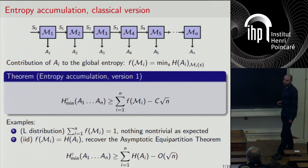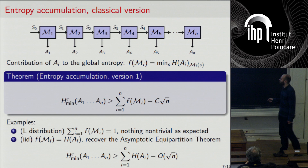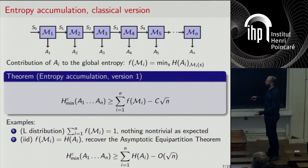This statement in the IID case is what is known as the asymptotic equipartition theorem. It's usually not formulated exactly in this way, but it is formulated as: there exists a typical set on which the probabilities are all upper bounded by two to the minus the sum of these entropies — which is the same thing.